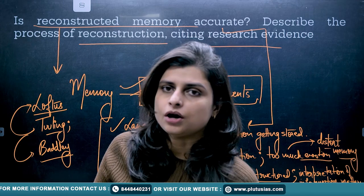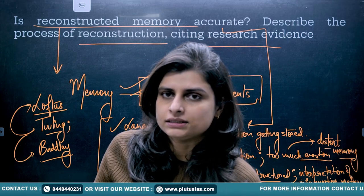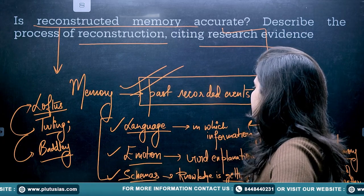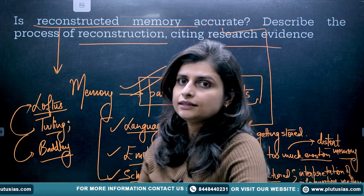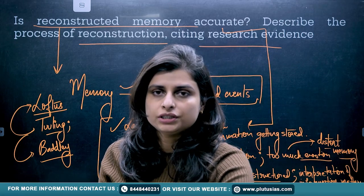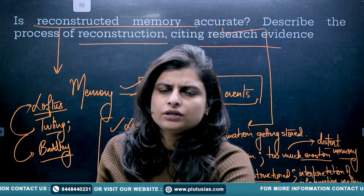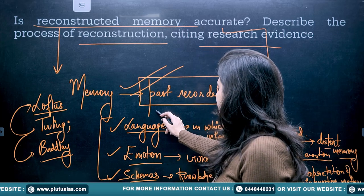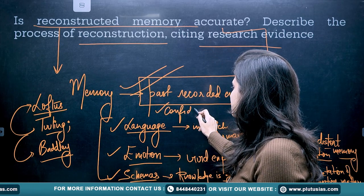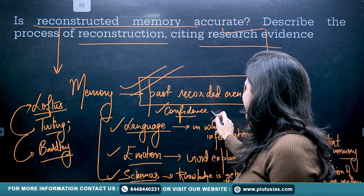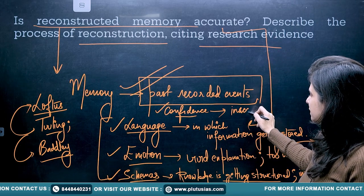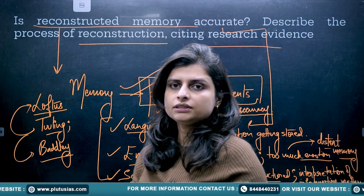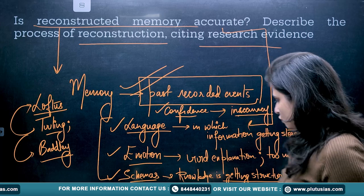Moving on, other than that, what they said was describe the process of reconstruction citing research evidence. It depends upon many factors — it depends upon emotion, for example, if someone is too heavy on emotions they might distort the information. Then there is confidence — some people are very confident about a detail even if the information is inaccurate, so confidence can also lead to inaccuracy in reconstructed memory.